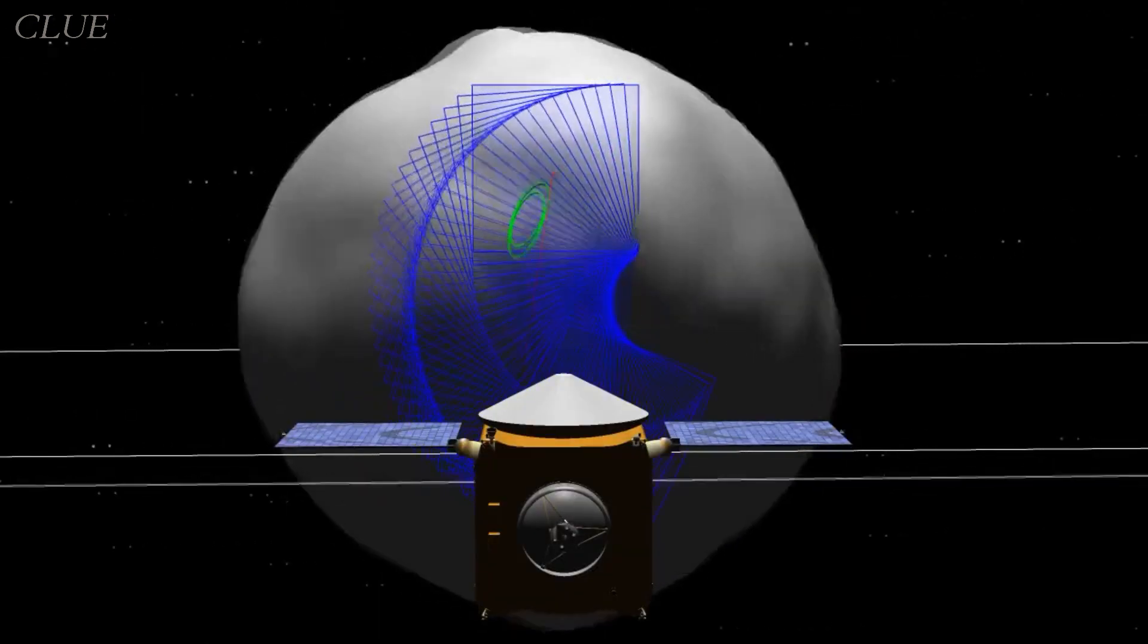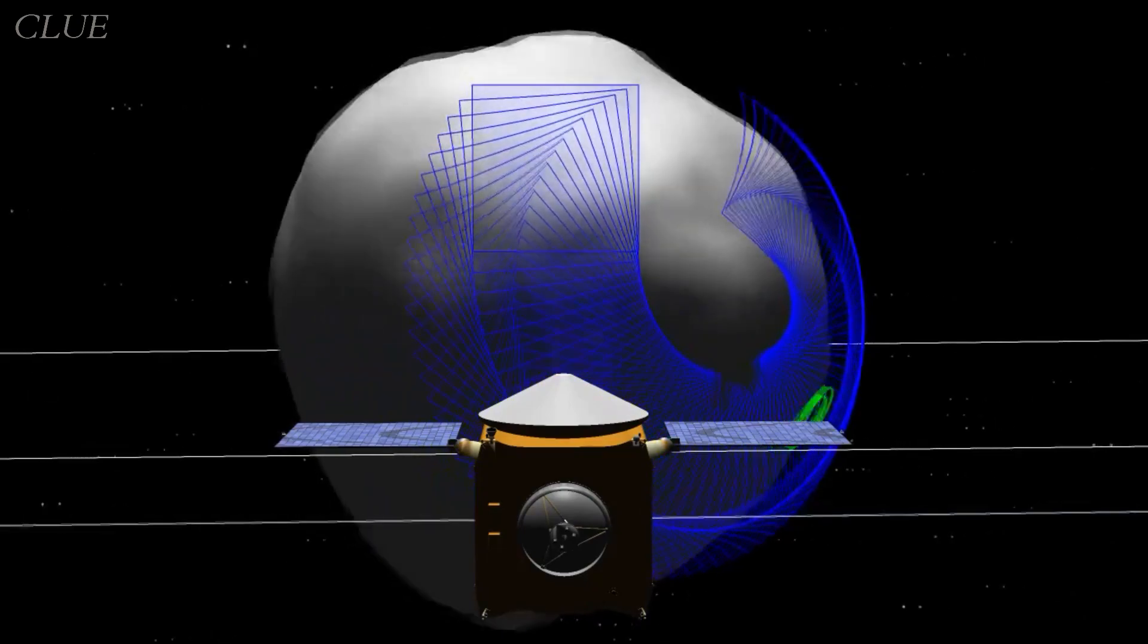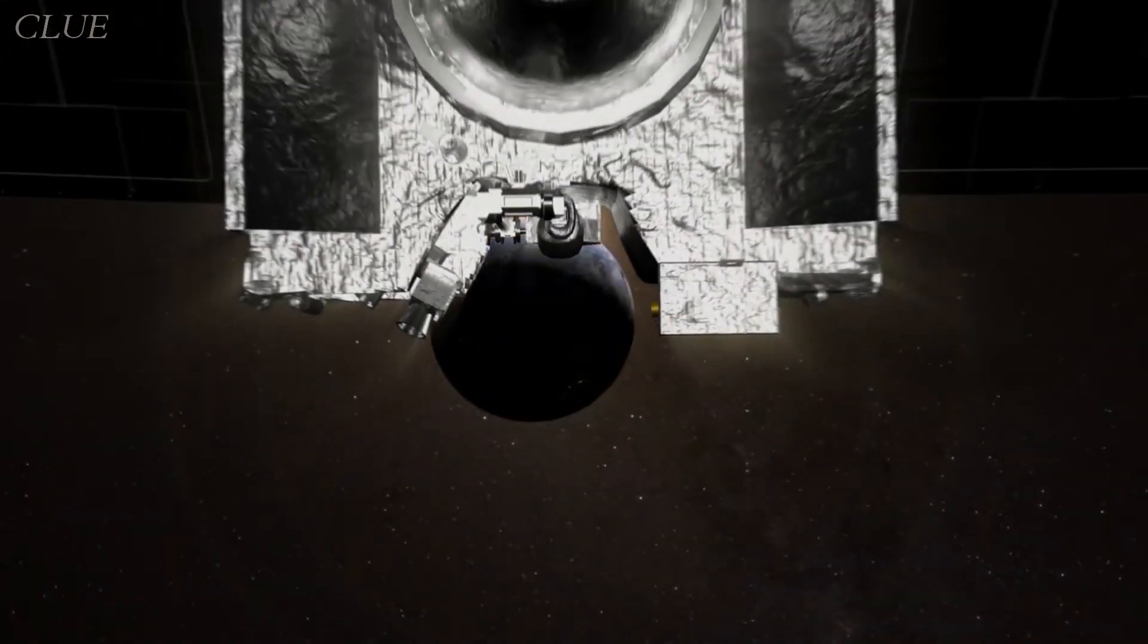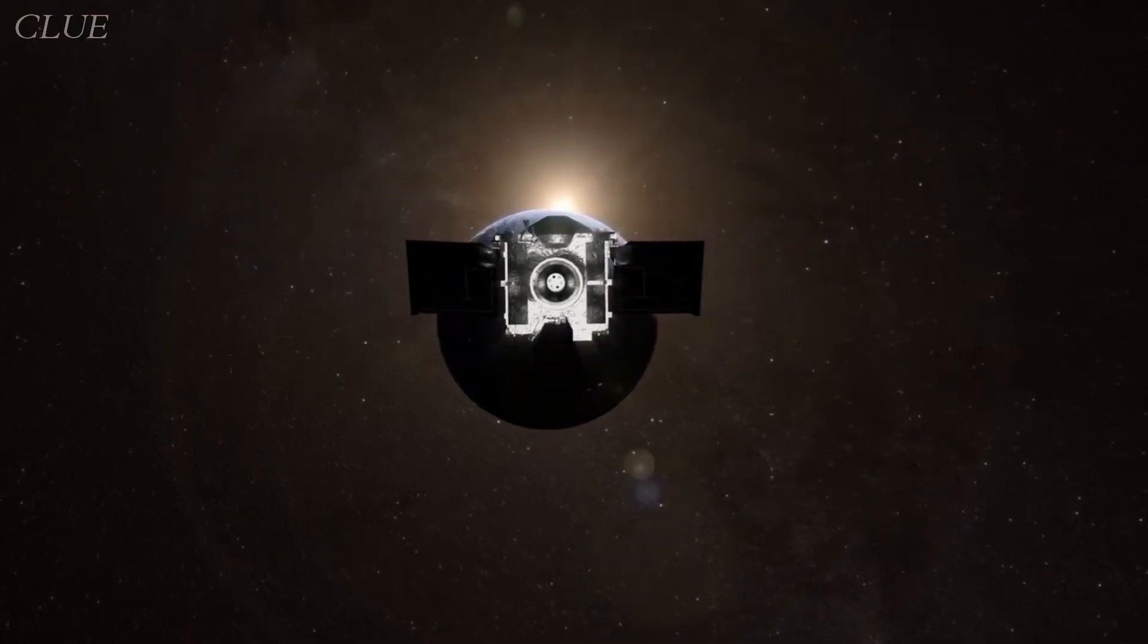After collecting the sample, OSIRIS-REx remained in orbit around Bennu to continue studying the asteroid. On May 10, 2021, the spacecraft maneuvered back to Earth, carrying within it the invaluable sample from Bennu. The journey back home lasted two years.